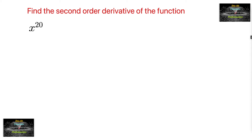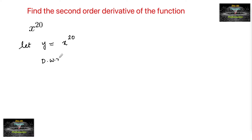Find the second order derivative of the function x to the power of 20. Let us consider y is equal to x to the power of 20. Now differentiate with respect to x, so we will have dy by dx is equal to d by dx of x to the power of 20.